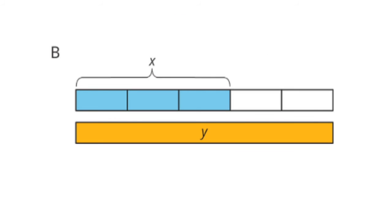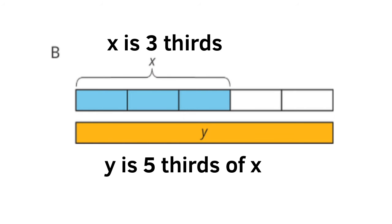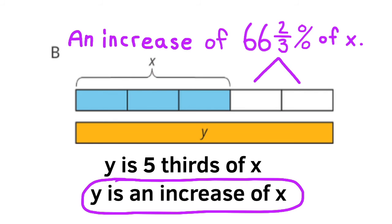Part b: again x is the blue shaded part with three thirds. Y is five-thirds the length of x. Going from three-thirds to five-thirds means y is an increase of two-thirds of x, so y is an increase of 66 and two-thirds percent of x.